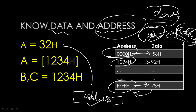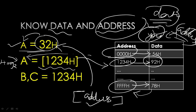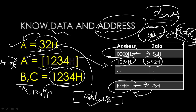If I write a number directly, it's data — for example, A = 32H means 32H is data stored in register A. But with square brackets, [1234H] is an address, and the data at that address is 92H, so 92H moves to register A. When I write BC with data 1234H, 12 transfers to B and 34 transfers to C — that's loading a pair.